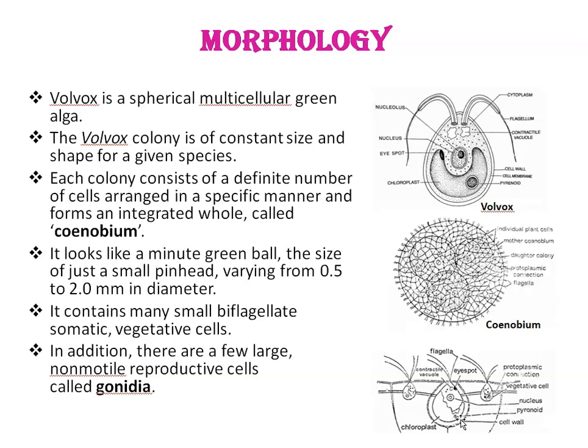In addition, there are few large non-motile reproductive cells called gonidia, mostly in the posterior zone. The reproductive cells never have functional flagella and never contribute to any somatic function of the individual — they are entirely specialized for reproduction. In some species, the reproductive cells are derived from cells that originally look and function like somatic cells before they enlarge and divide to form new progeny. Depending upon the species, the number of cells in the colony varies between 500 to 500,000 cells. Each cell has its own gelatinous sheath, and cells are connected to neighbors by a series of broad protoplasmic strands.